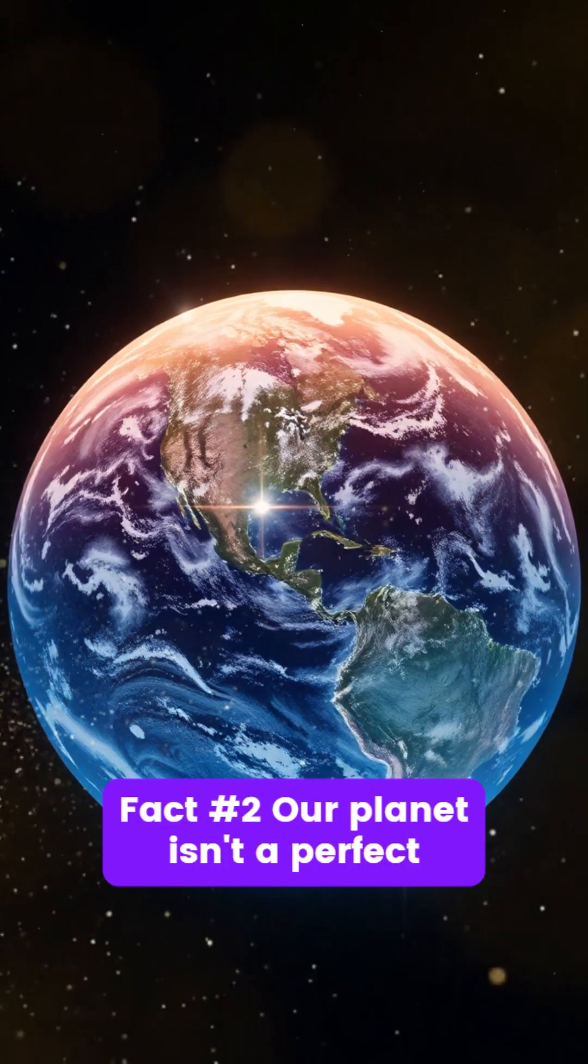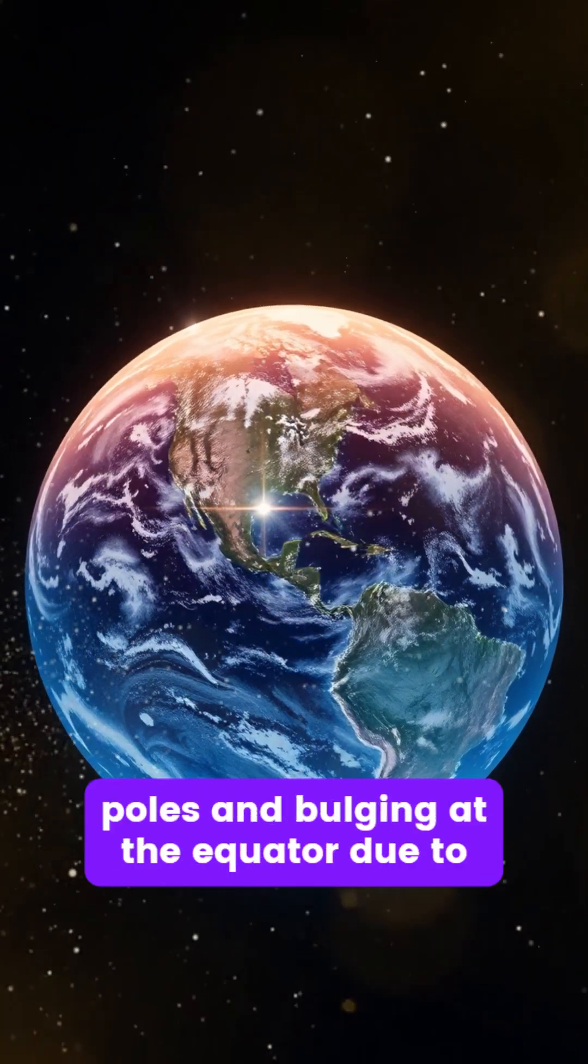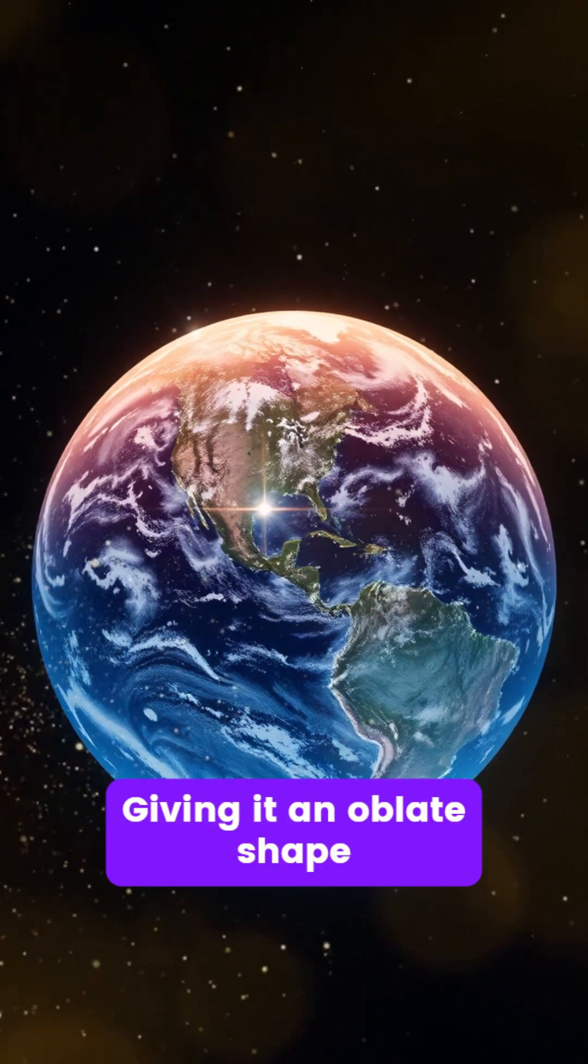Fact number 2. Our planet isn't a perfect sphere, it's slightly flattened at the poles and bulging at the equator due to its rotation, giving it an oblate shape.